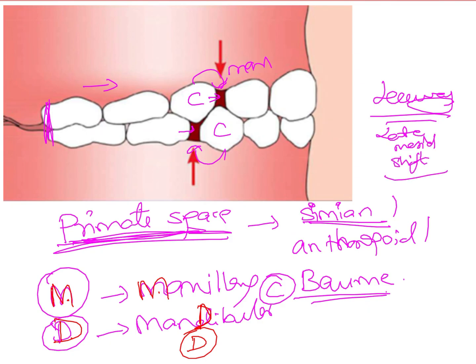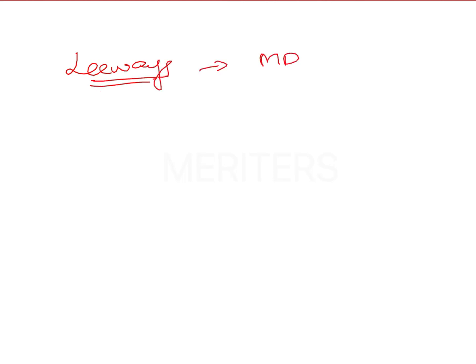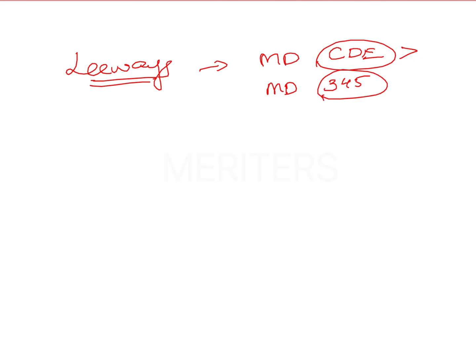An important question is: what is the leeway space and what is the amount of leeway space in the maxillary and mandibular arches? Leeway space is the difference in the mesiodistal dimension between the deciduous canine, first molar, and second molar, and the mesiodistal dimension of the succedaneous teeth — that is, the permanent canine and the premolars. The mesiodistal width of the deciduous teeth is greater than that of the permanent teeth replacing them, and this excess space is known as the leeway space.